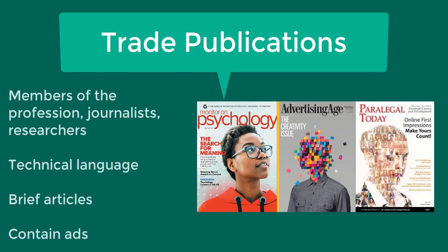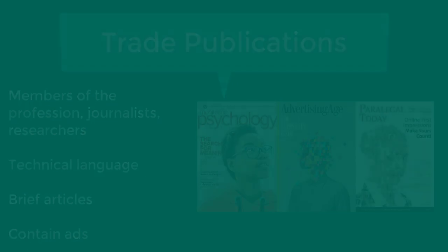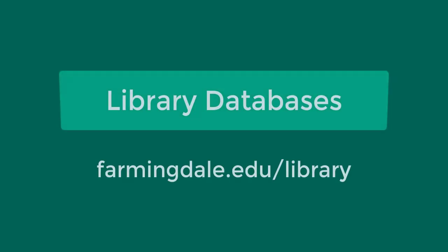Articles may be written by members of the profession, journalists, and researchers. Technical language is used, the articles are usually brief, and the publications contain ads. Trade and professional literature resembles scholarly literature, but the content is different because they do not contain research articles. If you need scholarly peer-reviewed sources for your assignment, you can easily search for these sources in library databases.